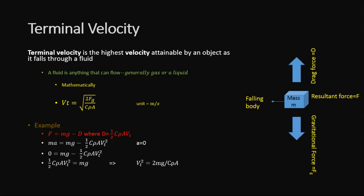Now we will determine Vt as Vt = √(2Fg/CρA), where Fg is the gravitational force, C is the drag coefficient, ρ is the density of the object, and A is the area of that object.